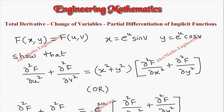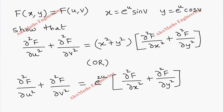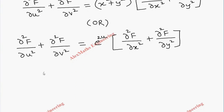Hi students, this is Alex here. The function f is in terms of x and y as well as in terms of u and v, where x is eᵘ·sin v and y is eᵘ·cos v, and we have to prove this expression. As a first part, we are going to find ∂f/∂u.